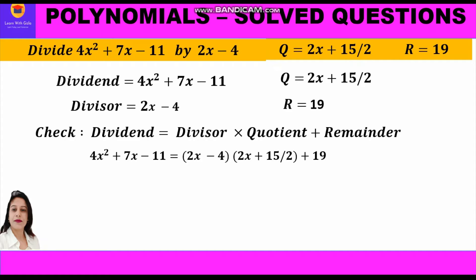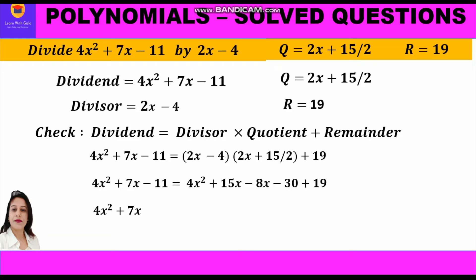We expand the two binomials: take the first term of the first bracket and multiply with both terms of the second bracket, then the second term of the first bracket and multiply with both. So 2x × 2x = 4x², 2x × 15/2 = 15x, (−4) × 2x = −8x, and (−4) × 15/2 = −30, plus 19.